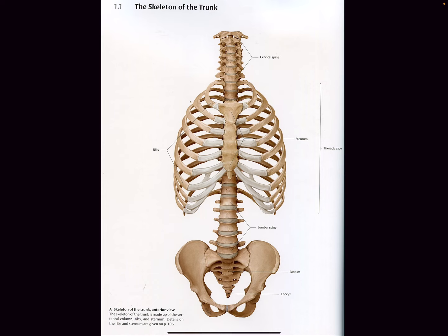We're going to jump in and break this apart into individual pieces of the body, broken into hierarchies we can understand in terms of shape. The first and biggest is the skeleton of the torso, because that is kind of where everything connects. The skeleton of the trunk is made up of three major landmarks — by looking at this image, what are those landmarks? Spine. Ribs. Pelvis.